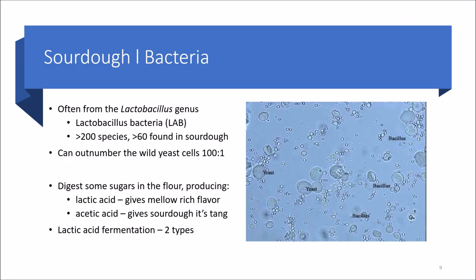There are thought to be hundreds of species of wild yeast and similarly hundreds of species of sourdough bacteria, most often from the lactobacillus genus — often referred to as LAB or lactobacilli bacteria. This genus contains over 200 species, and so far over 60 species have been found in sourdough. Interestingly, lactobacilli bacteria can outnumber wild yeast cells 100 to 1. Bacteria also tend to be quite a bit smaller than yeast, which factors into how they outnumber the yeast cells.